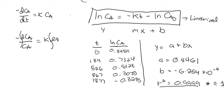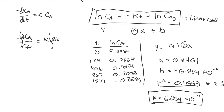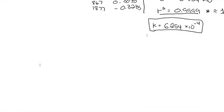Assuming the decomposition reaction follows first order, since R-squared is 0.9999, our k-value is our B coefficient, which equals negative k. Therefore k equals 6.254 times 10 to the negative 4. However, we still can't be sure, so we'll have to test at n equals 2, or for second order reaction.